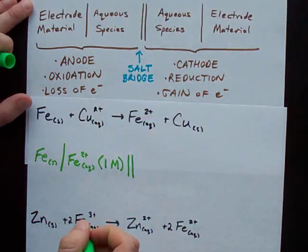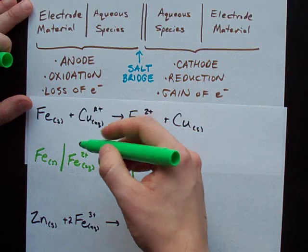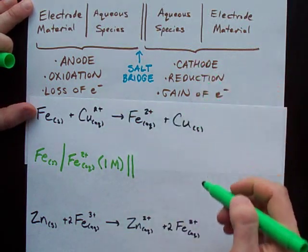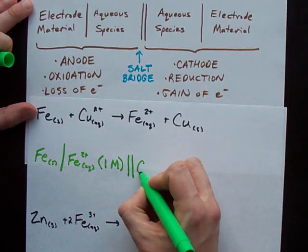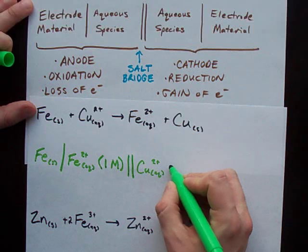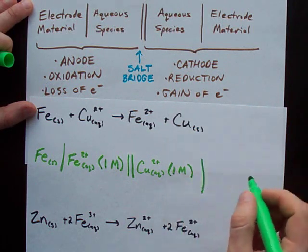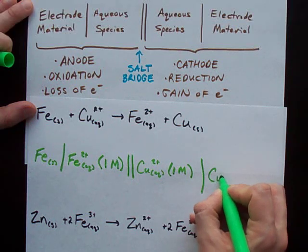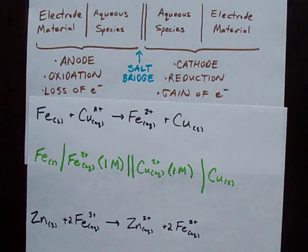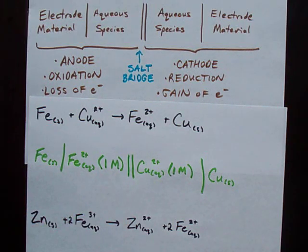Salt bridge. The copper goes from 2+ to copper solid. It's gaining electrons. It's part of the cathode where the reduction is happening. I've got copper 2+ ions right here. I didn't tell you what concentration they were, so let's assume they're one mole per liter. Single bar. And I have copper solid as my electrode material. There you go. There's your cell notation for this electric cell.